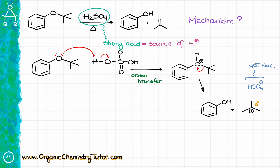In order to achieve our elimination, we are going to pull off one of the protons in the nearby position to our carbocation. Since I have three methyl groups, it doesn't matter which one I grab. I'm going to use my sulfate anion as a base here — it comes in, pulls my proton, making a double bond. That's going to look like this.